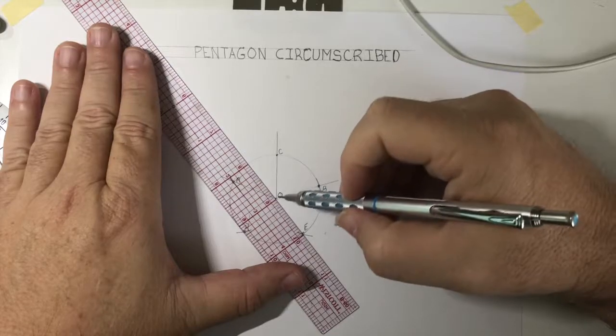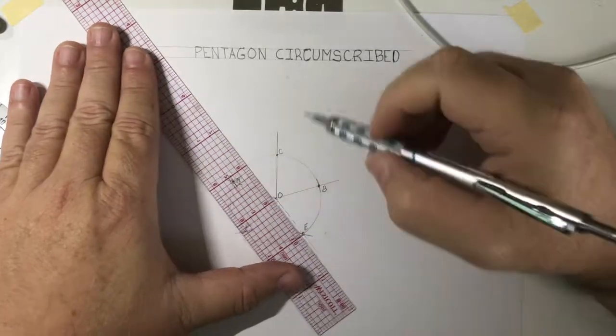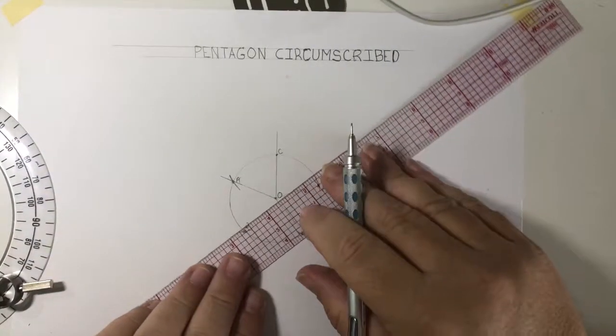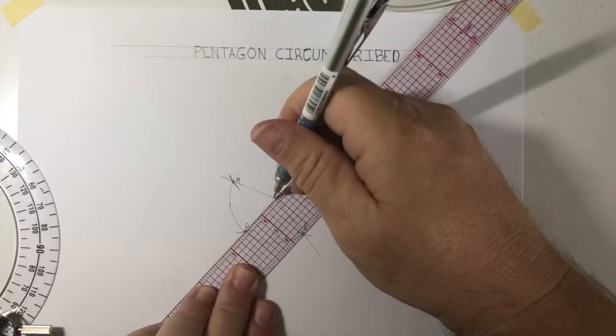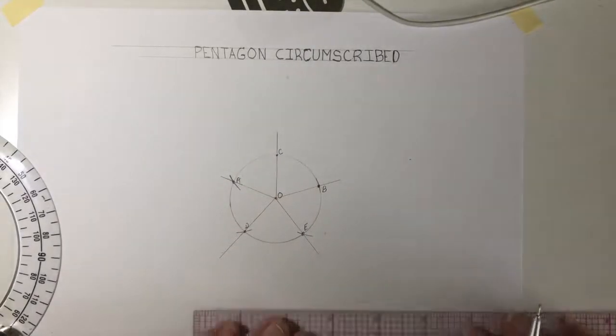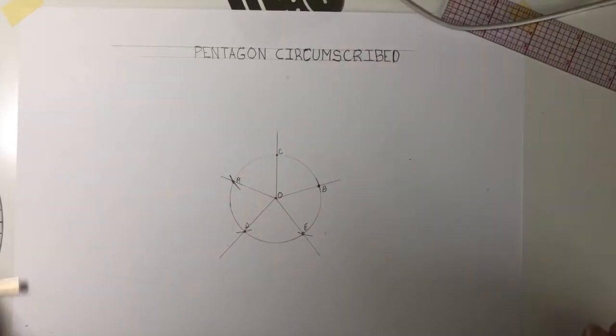Now I'm just going to draw a line through point E from O, and then line OD from O through D.